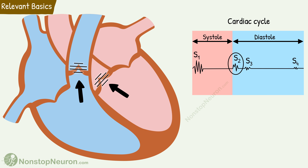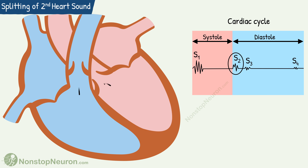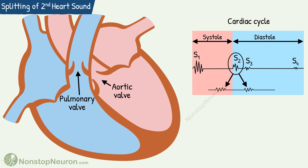Today's discussion is on this second sound. There are two valves involved in the generation of this sound: the aortic valve between the left ventricle and the aorta, and the pulmonary valve between the right ventricle and the pulmonary artery. So actually, there are two components of the second heart sound — A2 or aortic component due to closure of the aortic valve, and P2 or pulmonary component due to closure of the pulmonary valve.